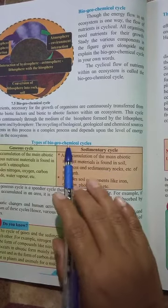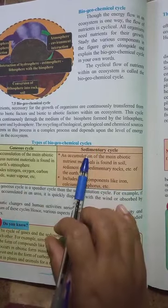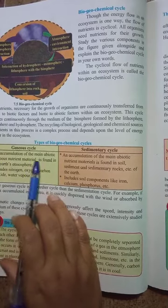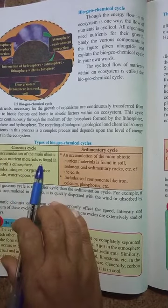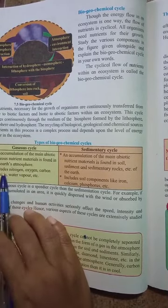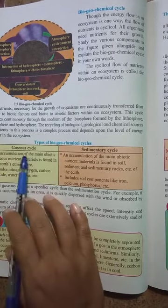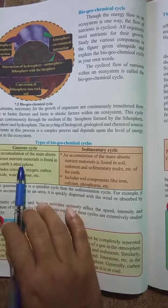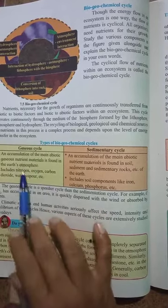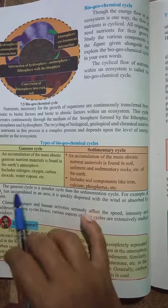There are two types of biogeochemical cycle. First, the gaseous cycle, and second, the sedimentary cycle. In the gaseous cycle, an accumulation of the main abiotic gaseous nutrient material is found in the earth's atmosphere. This includes nitrogen, oxygen, carbon dioxide, water vapor, etc.